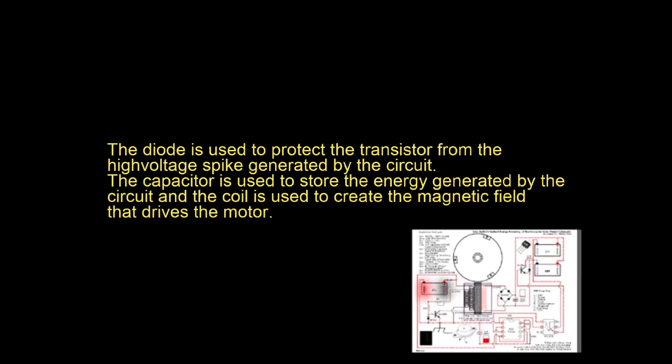The diode is used to protect the transistor from the high-voltage spike generated by the circuit. The capacitor is used to store the energy generated by the circuit and the coil is used to create the magnetic field that drives the motor.